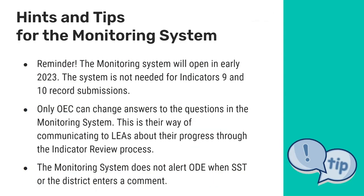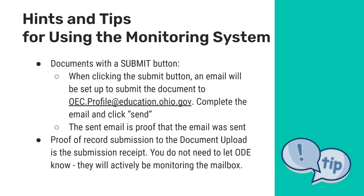As a reminder, the monitoring system where you will upload your SRSR and improvement plan will open in early 2023 — it does not open automatically when profiles are released. Only OEC can change answers to the questions in the monitoring system, as this is their way of communicating with LEAs about progress through the indicator review. When you have documents with a submit button, clicking it will set up an email to the OEC profile email address. Complete the email and click send — that sent email is proof of submission. Keep your submission receipt in case there are issues later. You do not need to notify ODE separately; they will actively monitor the OEC profile address mailbox.